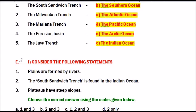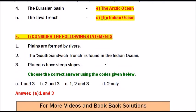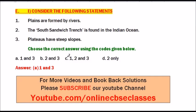Question number 6: Consider the following statements. Statement 1: Plains are formed by rivers. Statement 2: The South Sandwich Trench is found in the Indian Ocean. Statement 3: Plateaus have steep slopes. Choose the correct answer using codes given below. Options: A (1 and 3), B (2 and 3), C (1, 2 and 3), D (2 only). The answer is A, 1 and 3.